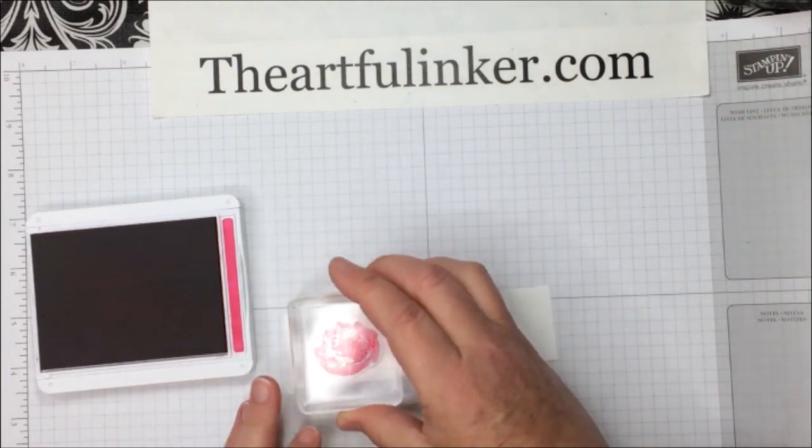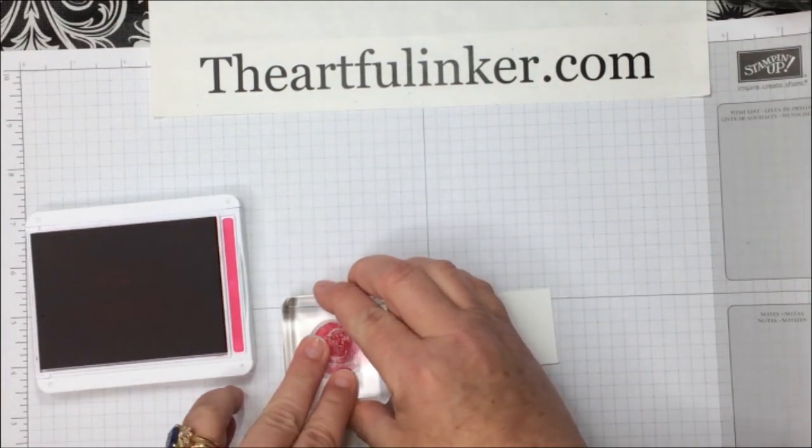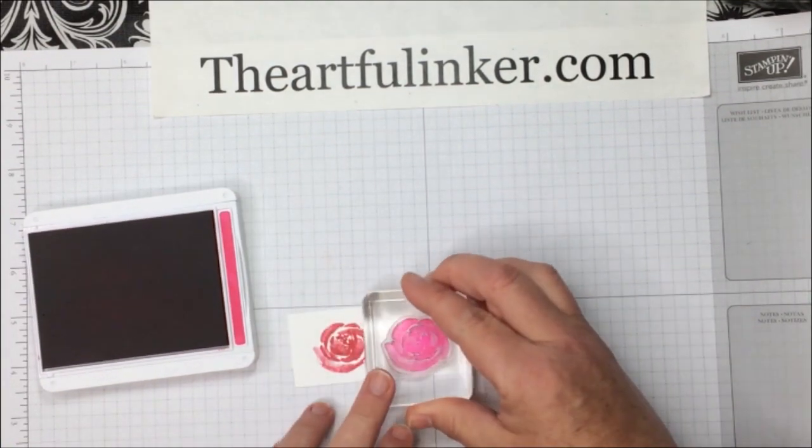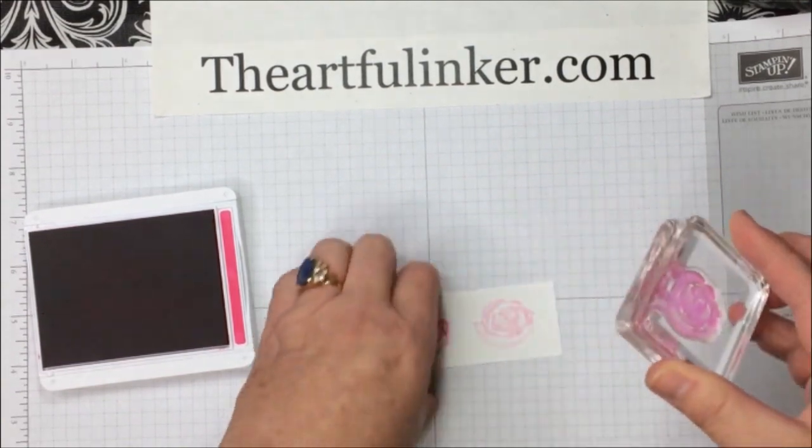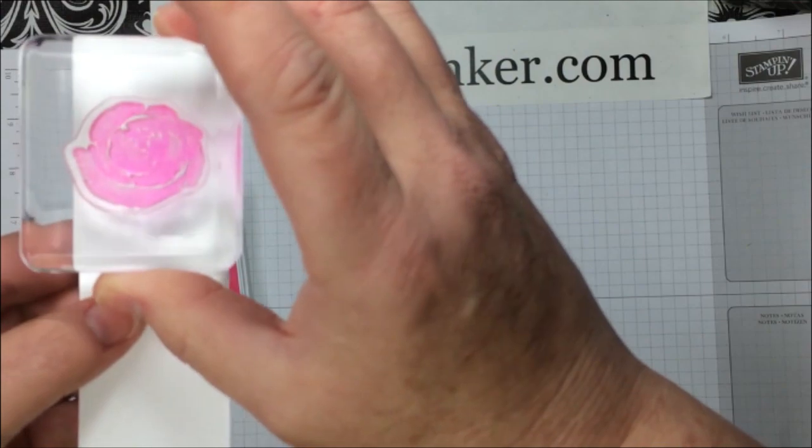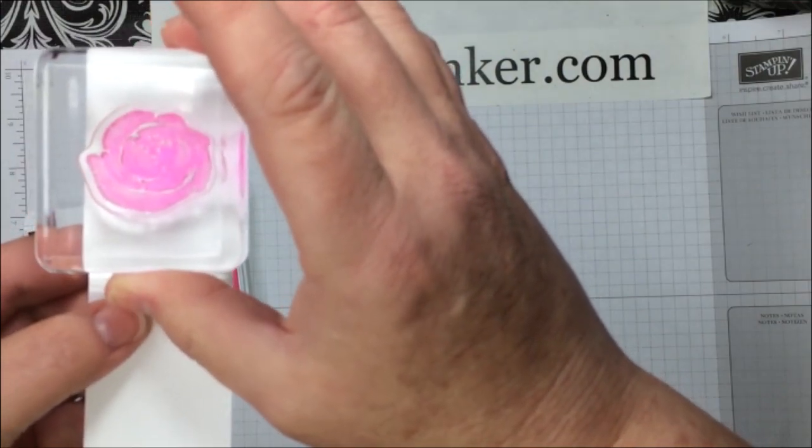It's nice and dark pink there. We've stamped. Stamp it off, stamp it off. As you can see, we're still pretty dark.